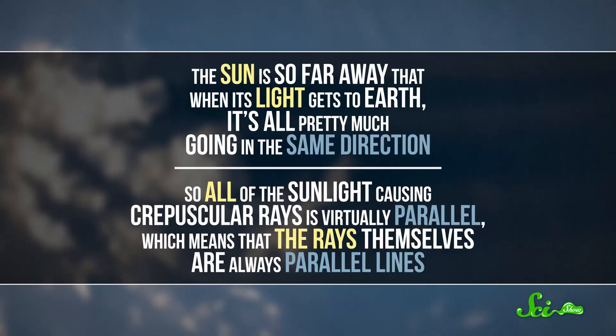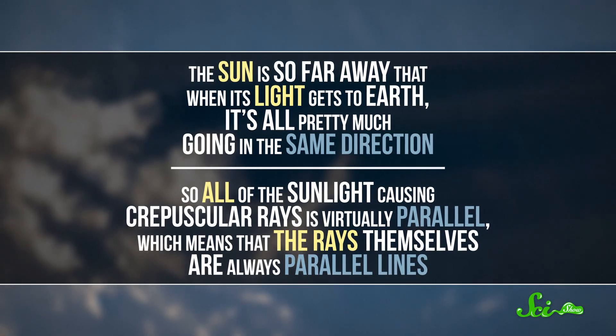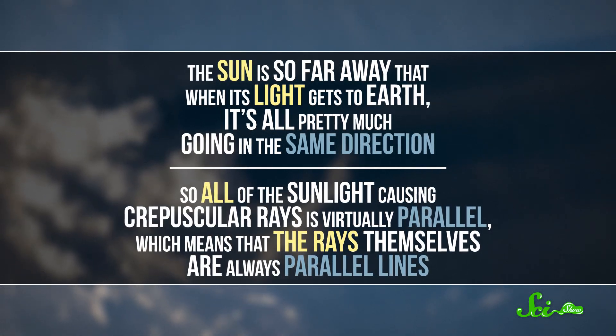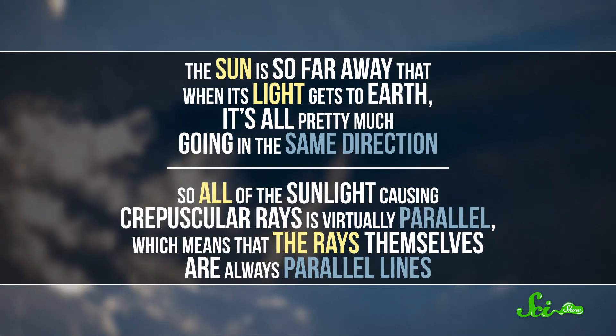So what's actually happening here? Are the rays parallel, or do they spread out from the sun? Well, both. The sun is so far away that when its light gets to Earth, it's all pretty much going in the same direction. So all of the sunlight causing crepuscular rays is virtually parallel, which means that the rays themselves are always parallel lines. They just look like they're meeting at the sun because of perspective, which makes things look smaller when they're farther away.